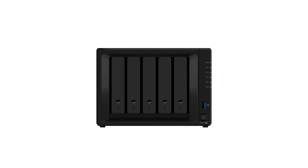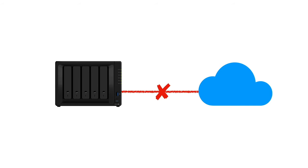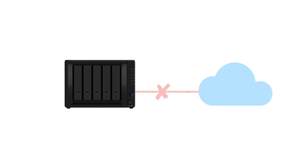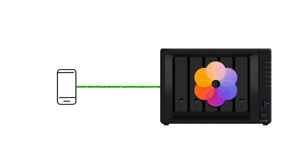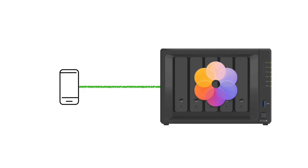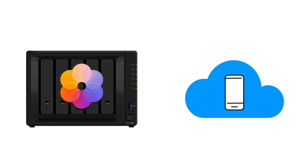If you have been following the other videos in this series, you will know that currently our Synology NAS has not yet been configured so that it can be accessed remotely over the internet. So after we install and configure Synology Photos, as long as our smartphone or tablet is connected to our home network, that device can be set up to back up photos and videos to our NAS. Then in a future video we will make our NAS remotely accessible through the internet so that Synology Photos will be able to act as a cloud backup for our smartphones and tablets.